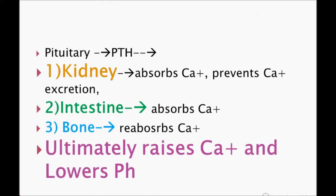The parathyroid gland secretes PTH, which acts on different organs. On the kidney, it causes reabsorption of calcium and prevents calcium excretion, raising blood calcium. In the intestine, it acts on intestinal cells to cause calcium absorption, further raising blood calcium. In bone, it causes reabsorption of calcium — the bone becomes weaker but blood calcium increases. Ultimately, PTH raises calcium and lowers phosphate.